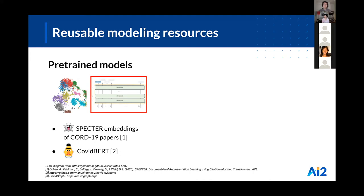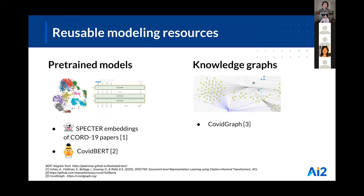AI systems also benefit from embedding individual words. The current state-of-the-art method for this is BERT, and people have been training variants of BERT to handle specialized language in scientific papers. COVID-BERT is trained on CORD-19 as an example. Knowledge graphs are collections of concepts or entities and the relationships between them. COVID-graph contains information about COVID-19 concepts and their relationships, as well as incorporating other gene and chemical ontologies.